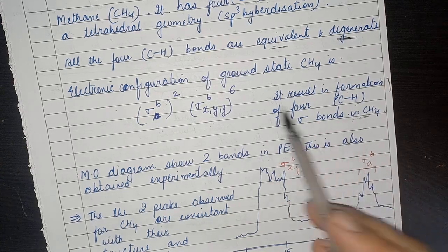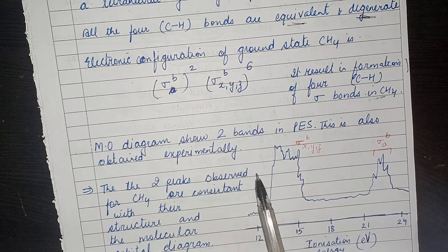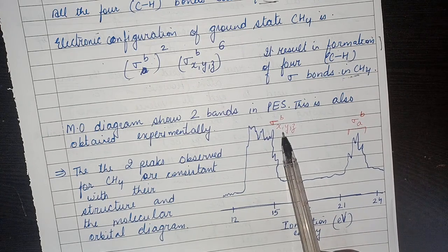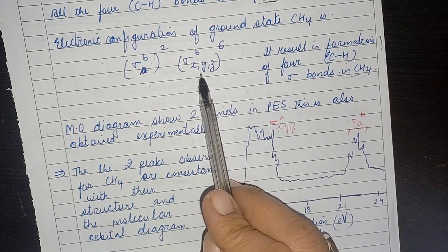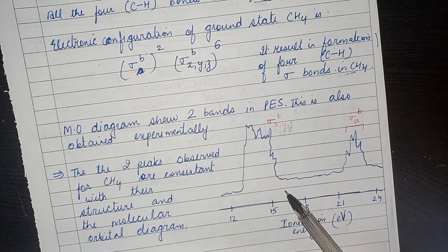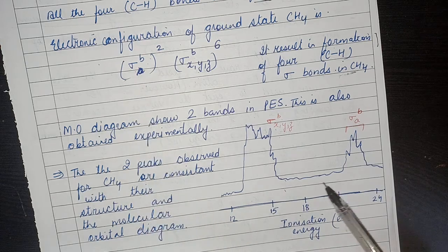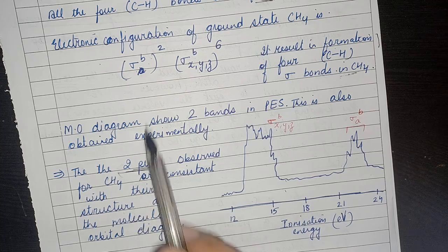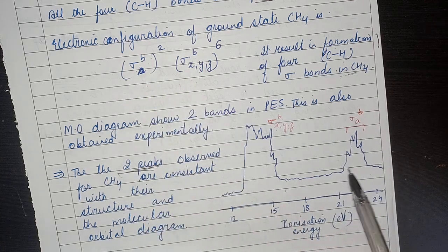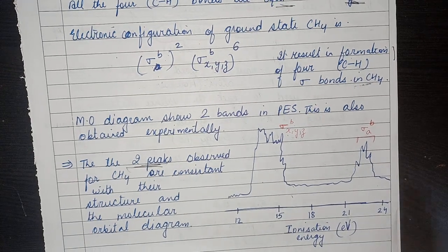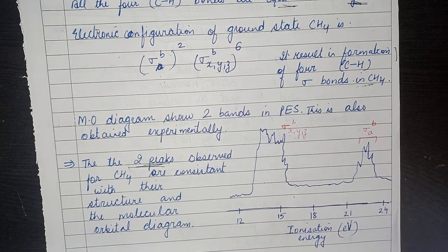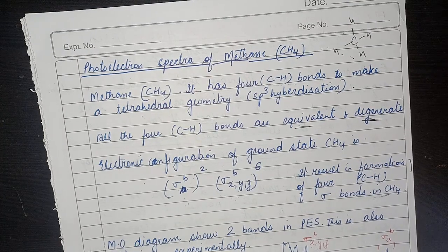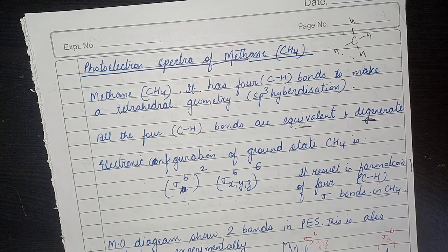According to this electronic configuration, we have two types of bands in the photoelectron spectra of methane. The first band is due to removal of an electron from the σxyz bonding orbital with 6 electrons. After removal of this electron, we observe two peaks which are consistent with the electronic configuration. So for the photoelectron spectra of methane, we obtain only two bands, which is consistent with the electronic configuration of the methane molecule.